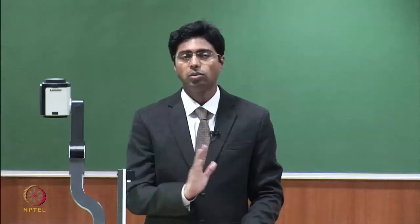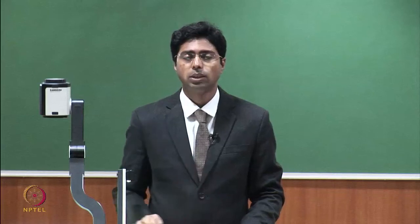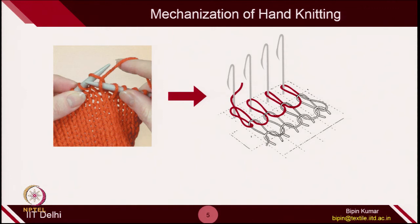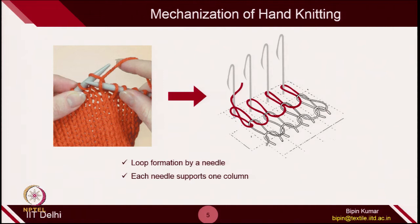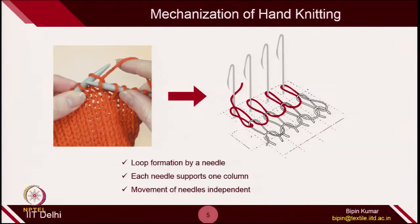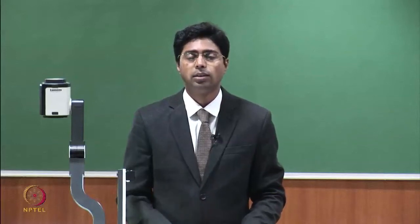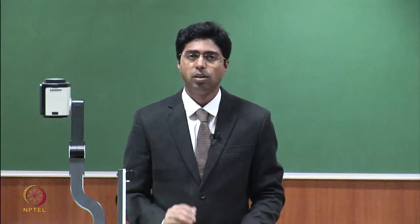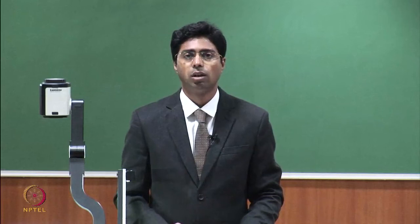How can we achieve this automation? Since each loop formation is highly independent, what we can do is control the loop formation in each column by a separate entity, and that entity is called a needle. Instead of controlling the fabric formation by 2 bars, we can have multiple needles — one for each column in the fabric structure. Each needle will support each column; if you have 1000 needles, 1000 needles will support 1000 columns. In this way, we can achieve very high fabric width. Also, the movements of needles are independent, so if we can control each needle precisely, there is less chance of tension variations and we can get a more uniform fabric structure.